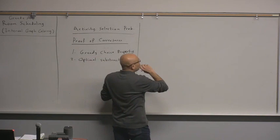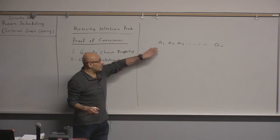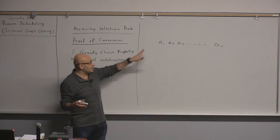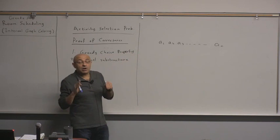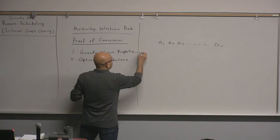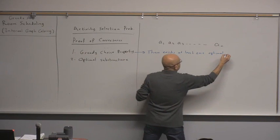The idea is as follows. I have a number of activities a1, a2, a3 through am. Without any loss of generality, these activities are sorted by finish time in ascending order, so a1 is the activity with the minimum finish time. If they are not sorted, I can sort them. Now, the greedy choice property means that there exists at least one optimal solution that starts with the greedy choice — the activity with the minimum finish time.